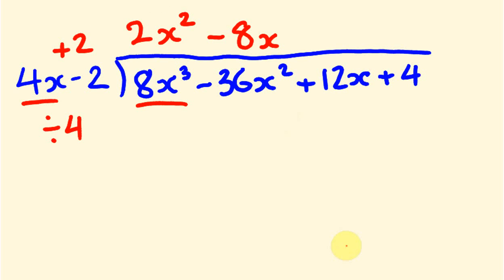2 times negative 8x is negative 16x. Negative 16x plus 12x is minus 4x. Going the power down and dividing by 4: minus 4 divided by 4 is minus 1. Checking the remainder: 2 times minus 1 is minus 2, and 4 minus 2 gives a remainder of 2. So isn't that a really cool method? I hope you like it — put in the comments whether you don't understand it at all or you really like it. Hopefully that helped you out. See you next time, bye.